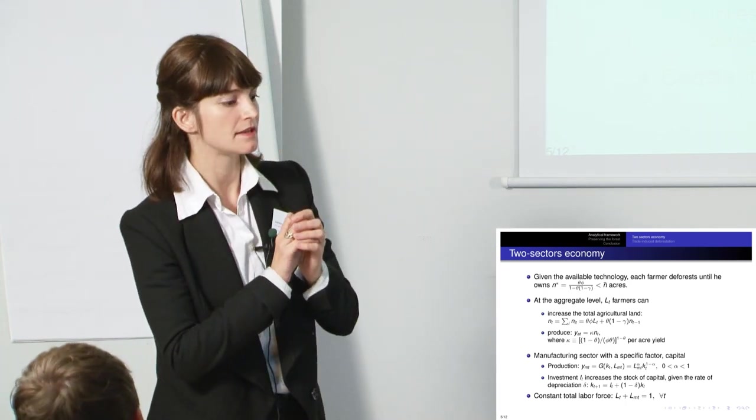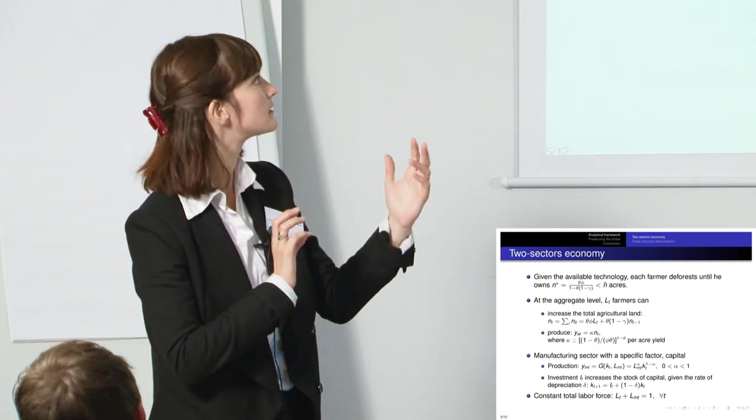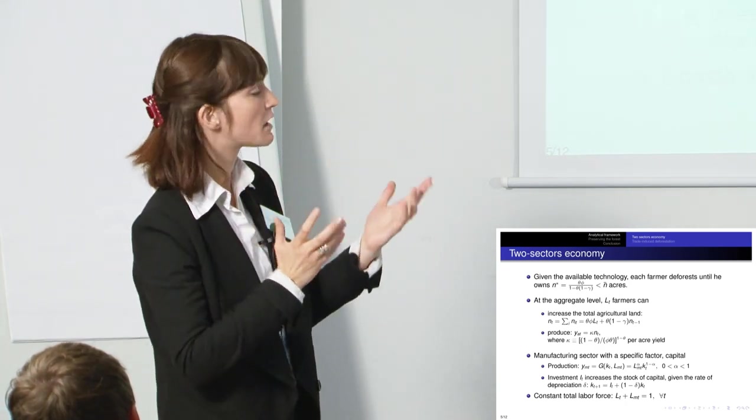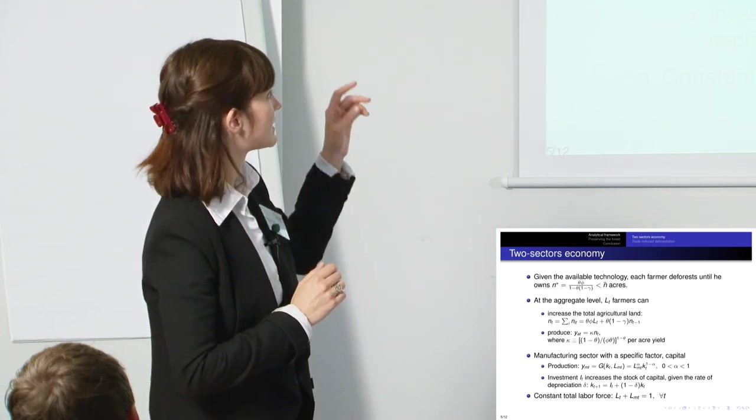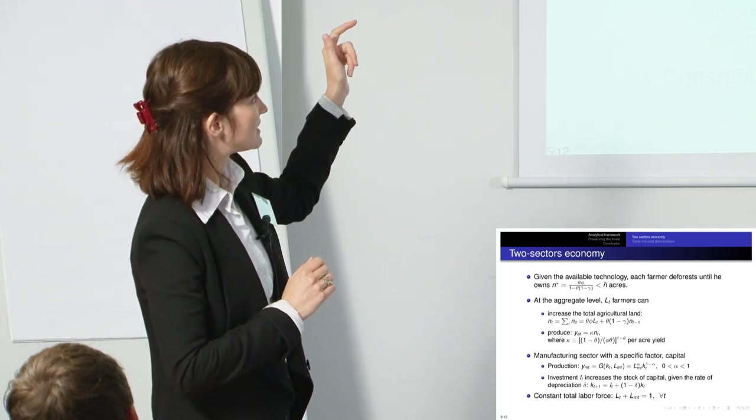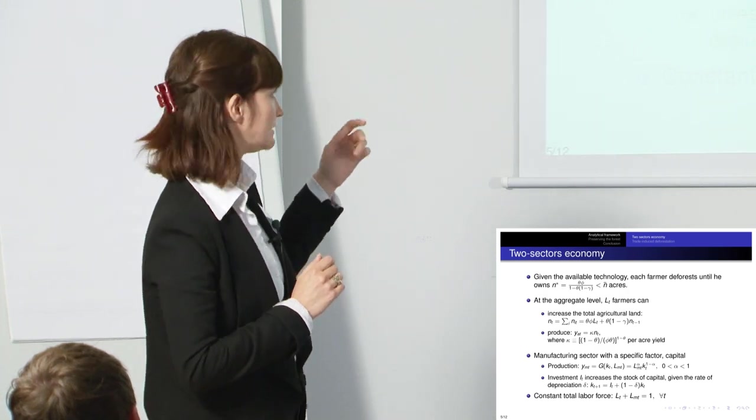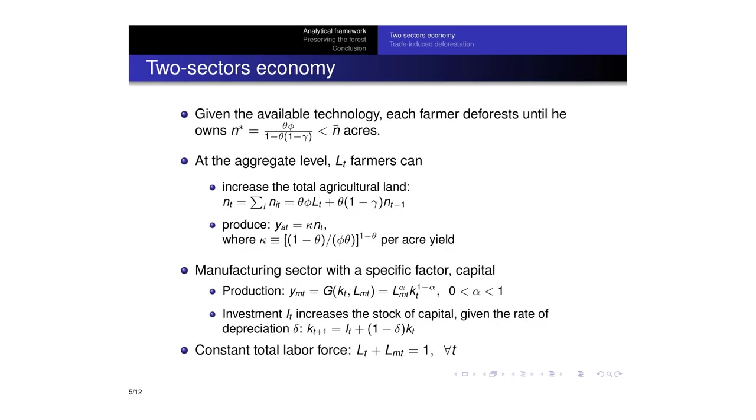And this can be added so that at the aggregate level, we have LT number of farmers. They use the amount of land that is at the aggregate level NT. And you can see that the aggregate level of land depends on the size of the rural labour force.